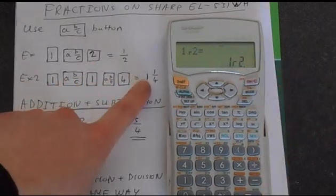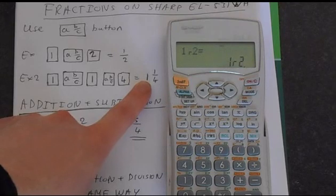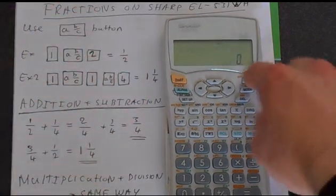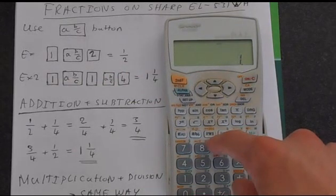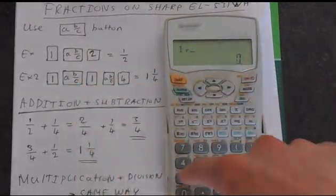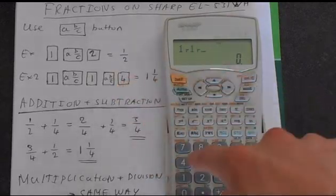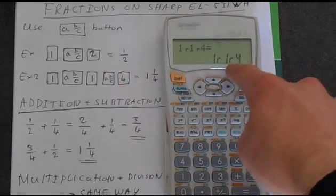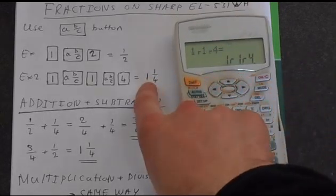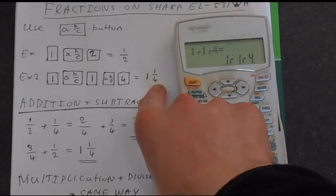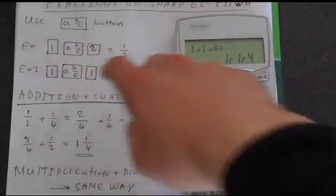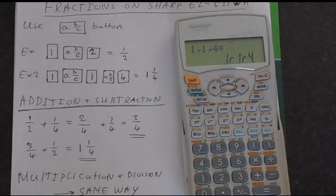It can also do these other types of fractions, like one and a quarter, which is 1.25. And it does this in quite a strange way. So you'd put in one AB over C button, then one, and that button again, and then four. And you'll get this 1R1R4, which is how the calculator represents one and a quarter. So just be aware of this so you can understand what the answers you're getting actually mean.